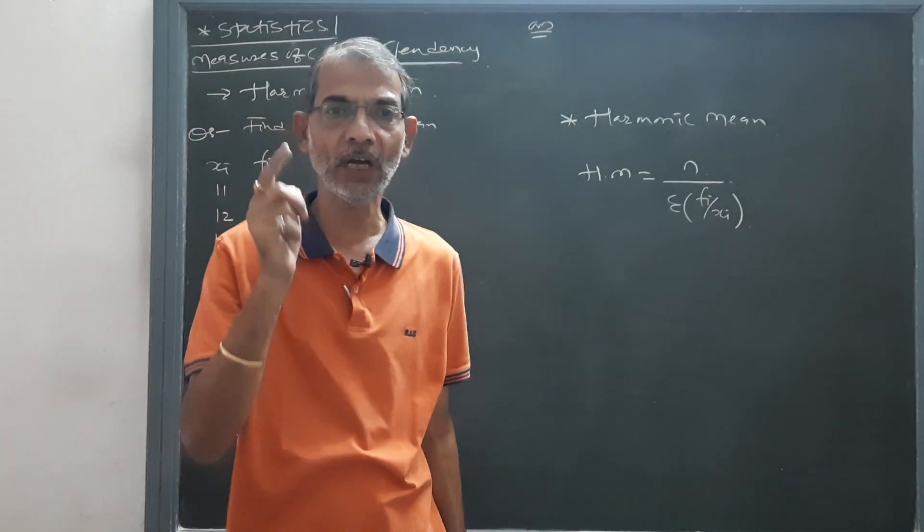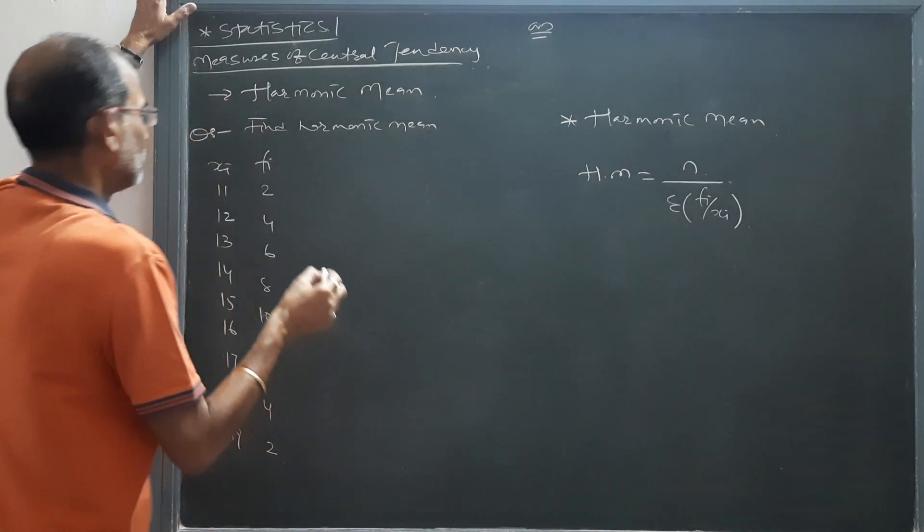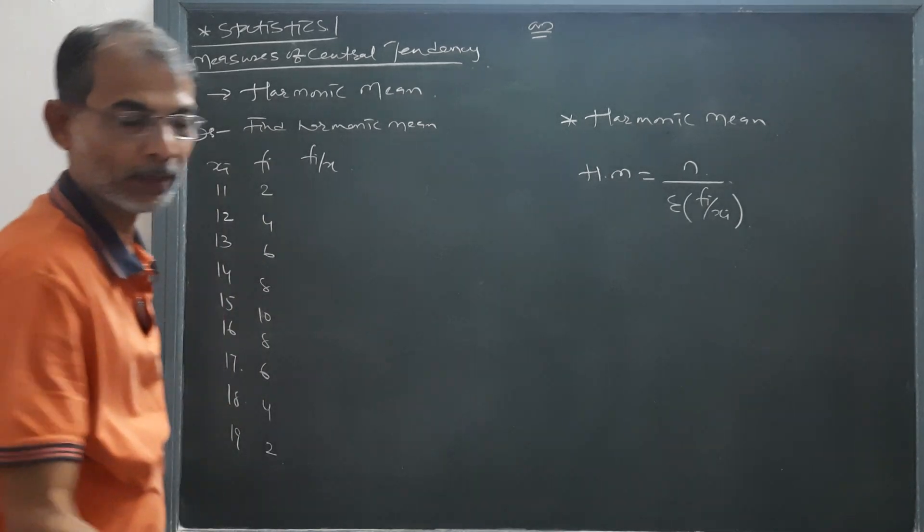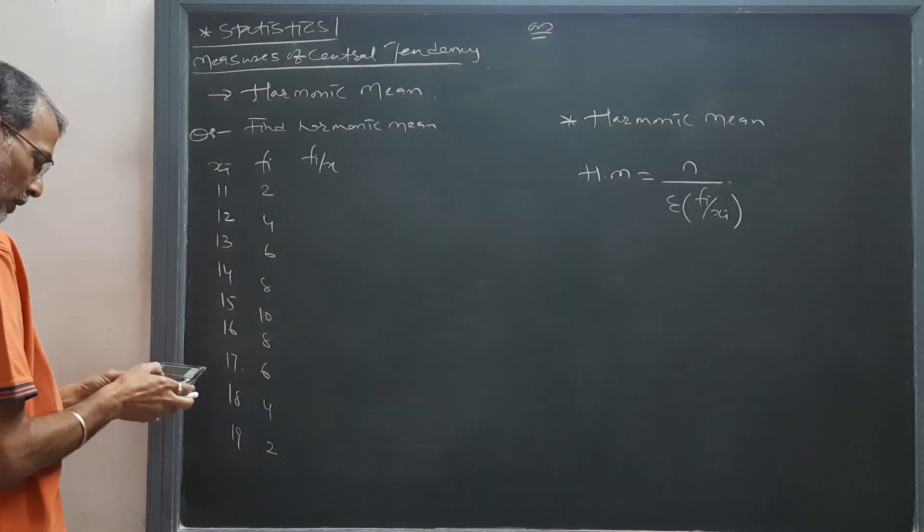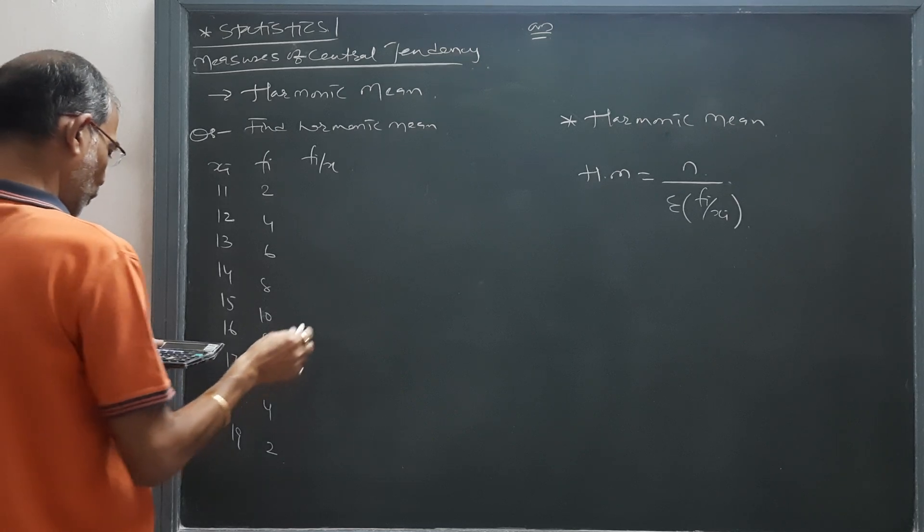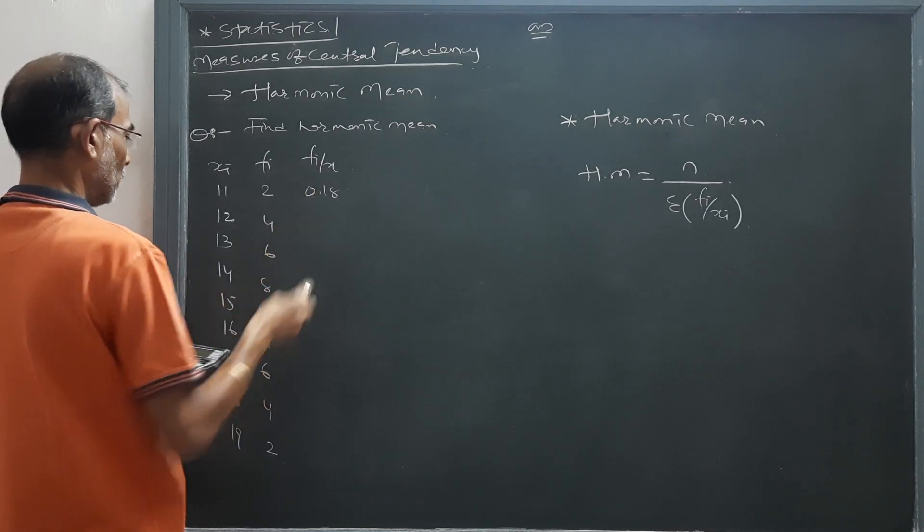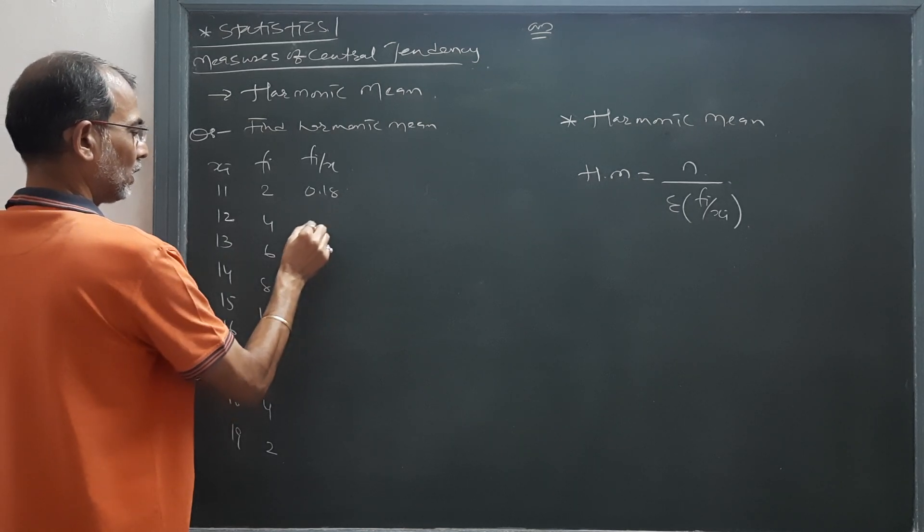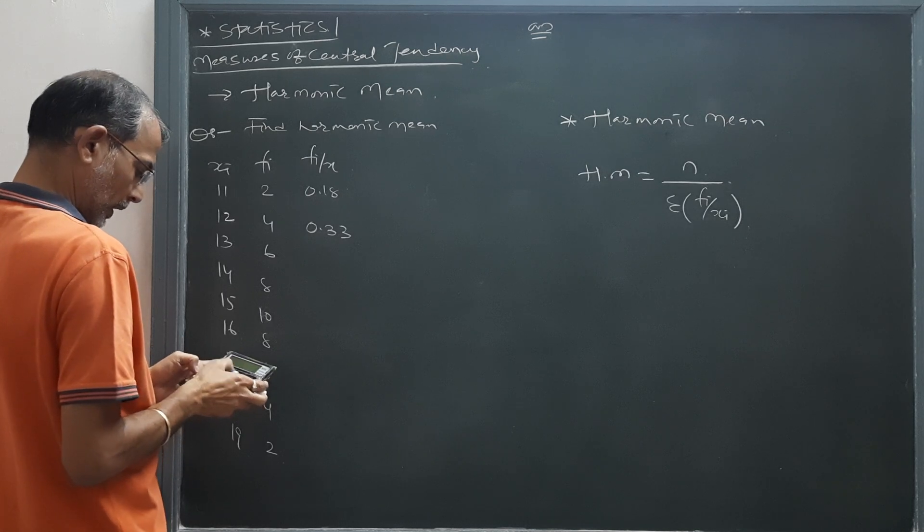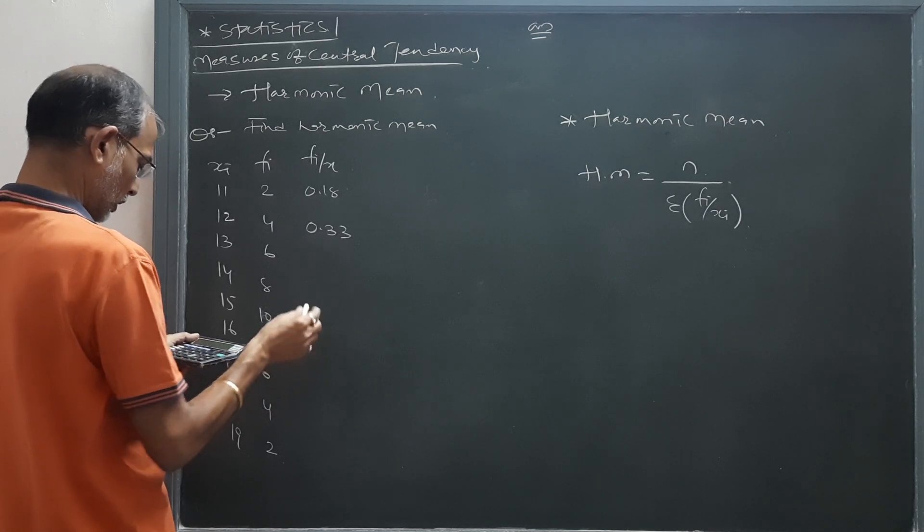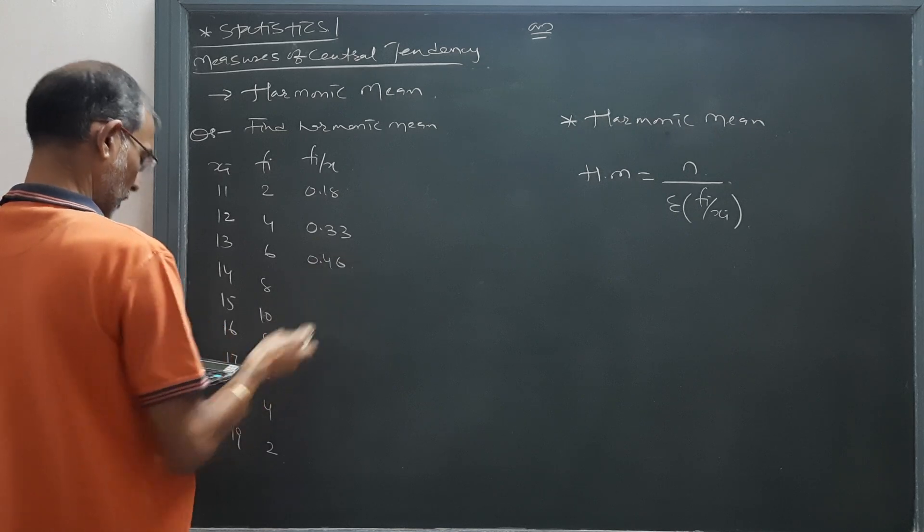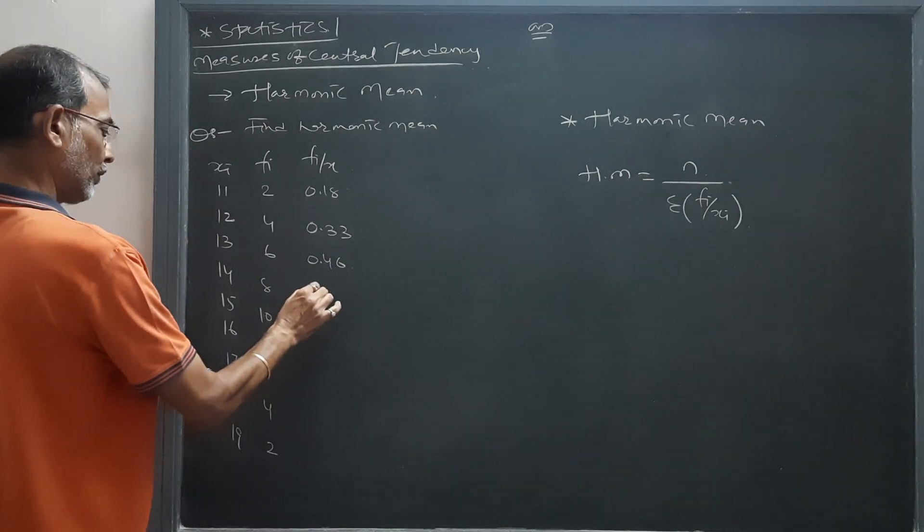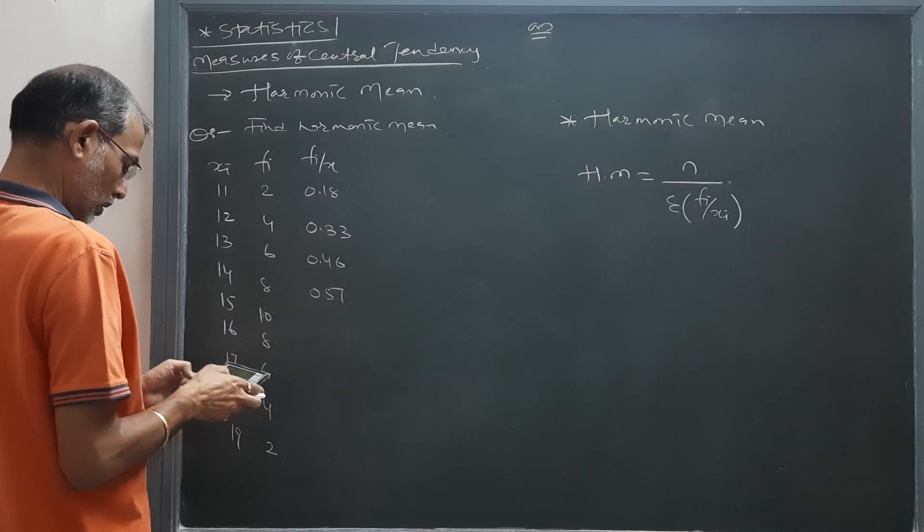2 divided by 11, that will be 0.18. 4 divided by 12, that will be 0.33. 6 divided by 13, 0.46. 8 divided by 14, 0.57. 10 divided by 15, that will be 0.67.